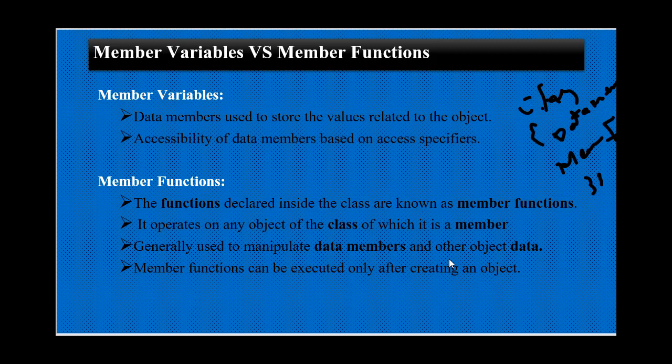Member variables — we use the object's values to represent a person. A person has characteristics like name and weight. The values of a class representing one person's character need to be stored, so we define a data member — the variable in which the value is stored — and name it as a data member of the class. In object-oriented programming, member variables are the data members used to store the values related to the object.